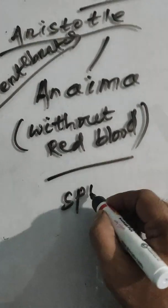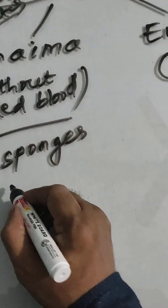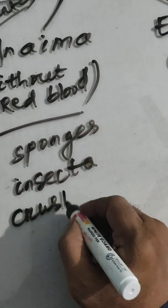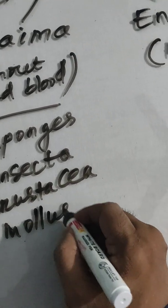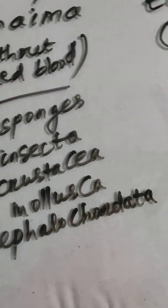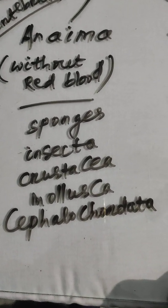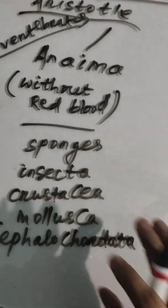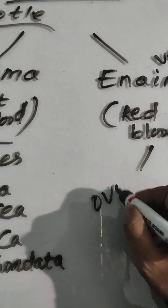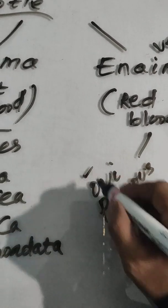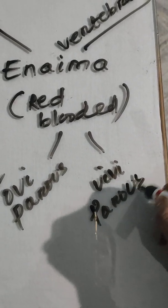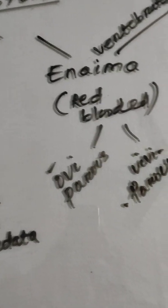Anaima, consisting of invertebrates, was divided into five classes: sponges, insects, crustacea, and others. The Enhaima, consisting of vertebrates, was further divided based on reproduction: oviparous — egg-laying animals — and viviparous — those giving birth to young ones. This is the detailed classification given by Aristotle.